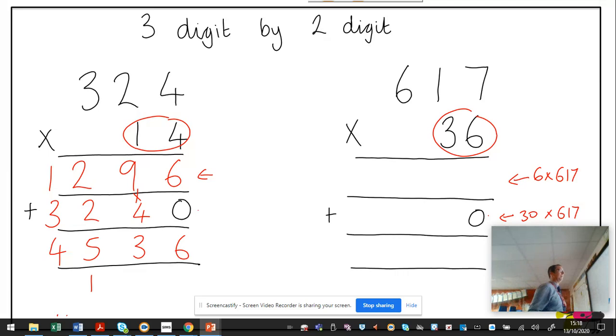We set it up like that. So six times seven, 42. And again, that times table knowledge is paramount. If you've not got your times table knowledge and you don't know them off by heart, this becomes a tricky method because there's a lot to remember. So six times seven, 42. Make it easy on yourself, learn your times tables. Six times one is six, add four, ten. Six times six is 36, add one, 37. So the answer to six times 617 is 3,702.